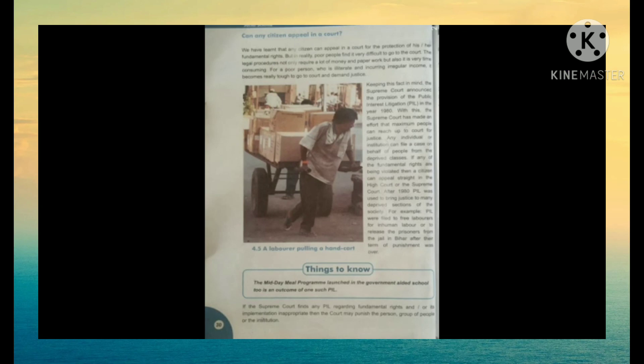In image 4.5, a laborer is pulling a hand cart. Can any citizen appeal in a court? We have learned that any citizen can appeal in court for the protection of his or her own rights. But in reality, poor people find it very difficult to go to the Supreme Court — because the procedure requires a lot of money, paperwork, and is very time-consuming. For a poor person who is illiterate and has irregular income, it becomes really tough to go to the court and demand justice.